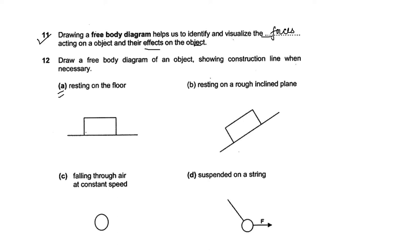As we just discussed, weight always acts downward — so this will be your weight. The book is kept on a certain surface, so there will be a normal reaction acting here, which I'm writing as R.